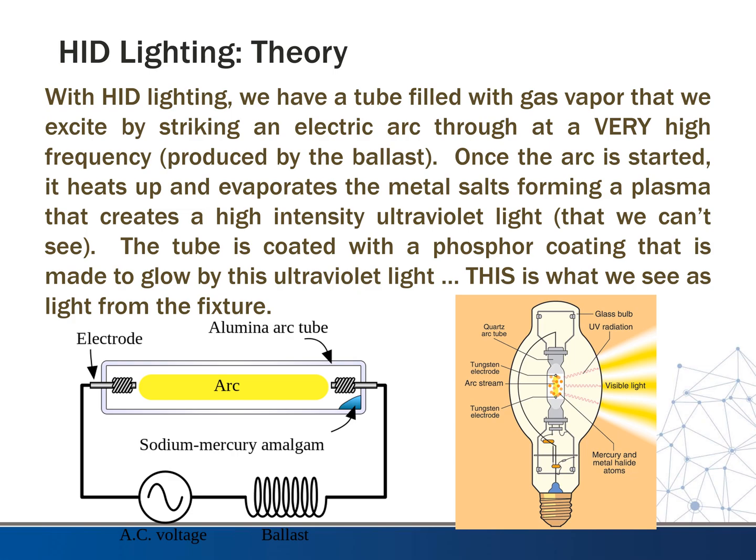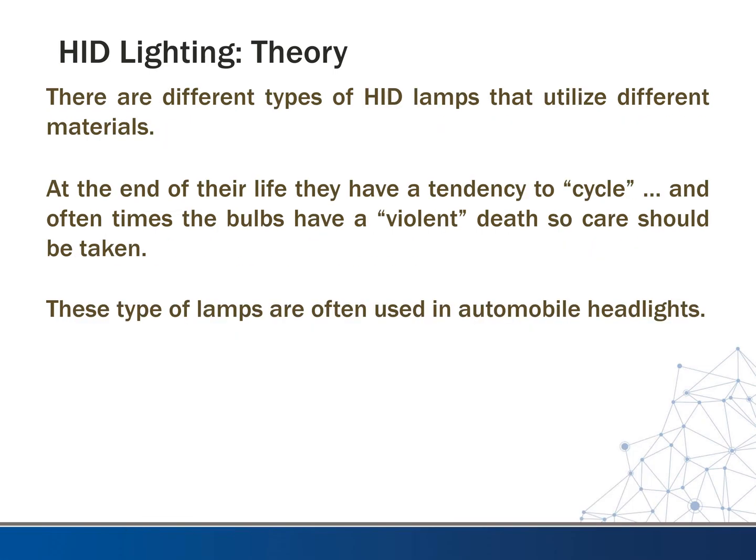We can't see this high-intensity UV light, so the tube would be coated — here's the tube of the bulb — coated with a phosphor coating. It's made to glow by this ultraviolet light, and this is what we see as the light from these types of fixtures. There are different types of HID lamps that utilize different materials as their source, and we'll take a look at each of these as we move forward.